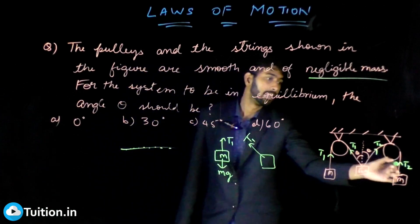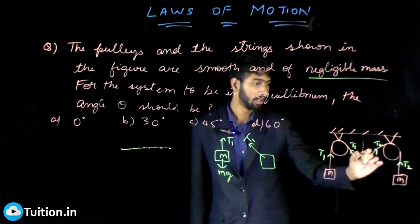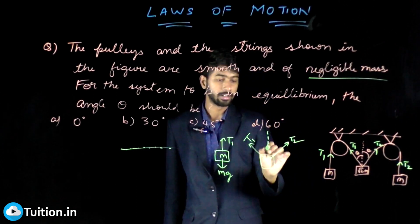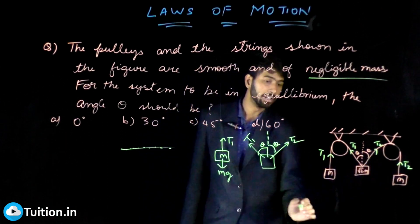So here you have a T2, and then an angle theta and a theta here. And if you look at the third mass, this is your T2 and this is your mg.